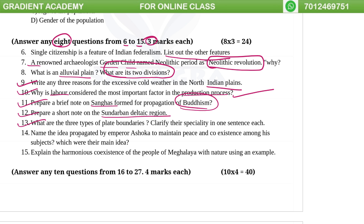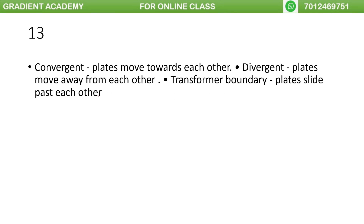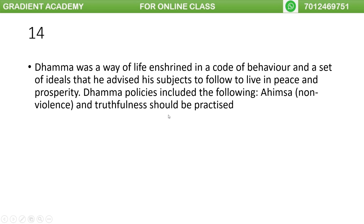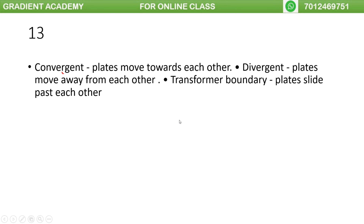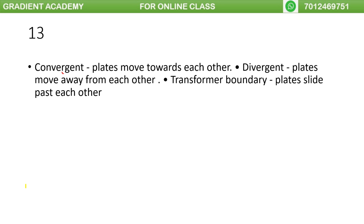What are the three types of plate boundaries? Clarify their speciality in one sentence each. The plate boundaries are convergent, divergent, and transform.